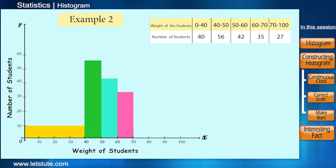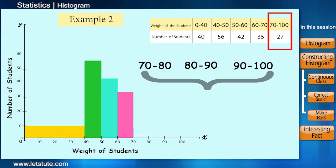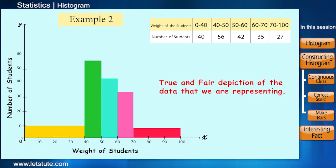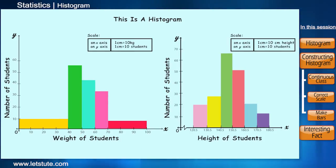The same will be done for the class 70 to 100. Here 3 classes will be made. So we will divide the frequency by 3 which will give us 9 and we will plot 9 on the graph. Now this histogram will give us a true and fair depiction of the data that we are representing. This is how we draw a histogram. And reading the histogram is also same as bar diagram only.